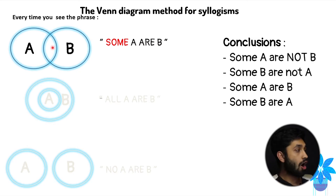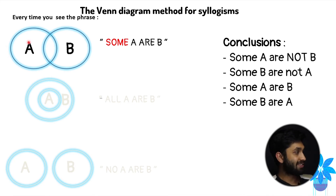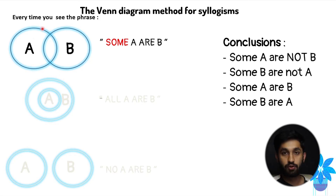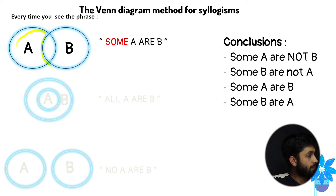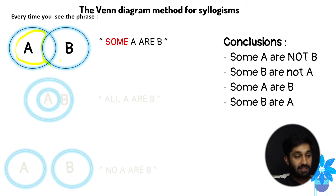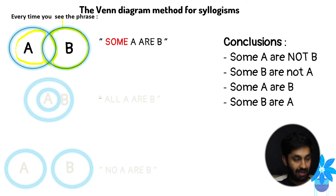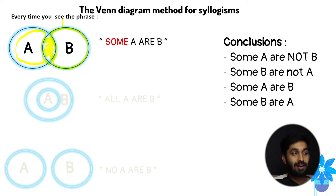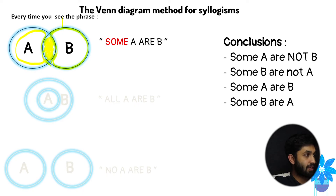Another conclusion is 'some A are not B' — that's the left portion with no overlap with B. The conclusion 'some B are not A' is the right portion with no overlap with A. 'Some A are B' is the middle overlapping portion, and 'some B are A' is also that middle portion. So those are the four possible conclusions from 'some A are B'.